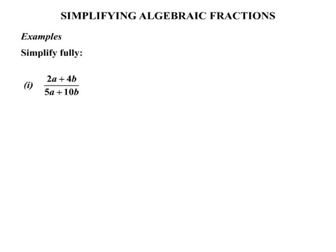The first example, 2a plus 4b, all over 5a plus 10b. Now, in these examples we're going to try to factorise before cancelling down. So if we consider the top 2a plus 4b, hopefully we can think of a common factor as being 2. So we take the 2 out and inside the brackets, to get 2a, that is 2 times a. And to get 4b, the positive 4b, that's 2 times positive 2b.